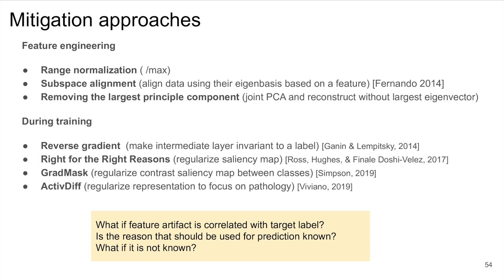The second type of approach is to regularize the training so that models are invariant to the confounding variable. The reverse gradient method uses a discriminator to make the distribution of activations between the values of the confounding variable indistinguishable, erasing that variable's information from the latent representation of the network — though training GANs is an art and can be very difficult. The right for the right reasons approach regularizes the saliency map for each sample so that it does not focus on a known distracting region of the image, requiring a weak segmentation of the distracting object. The grad mask approach is similar but regularizes the saliency map as a contrast between classes. Finally, the active diff approach regularizes the feature activations with and without a distracting feature masked out to make the model invariant.